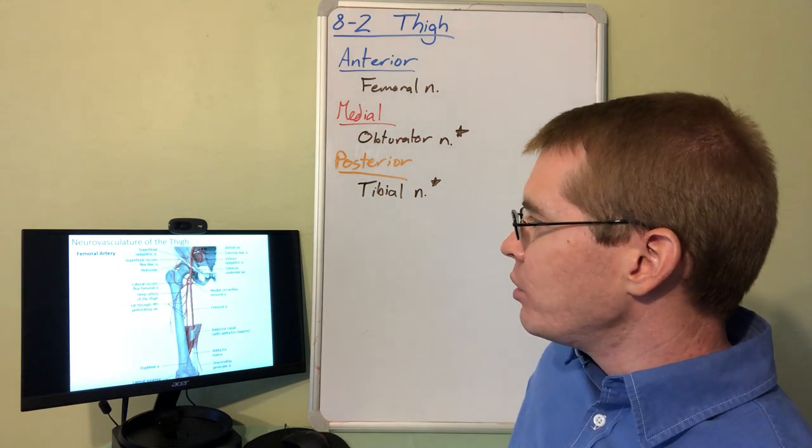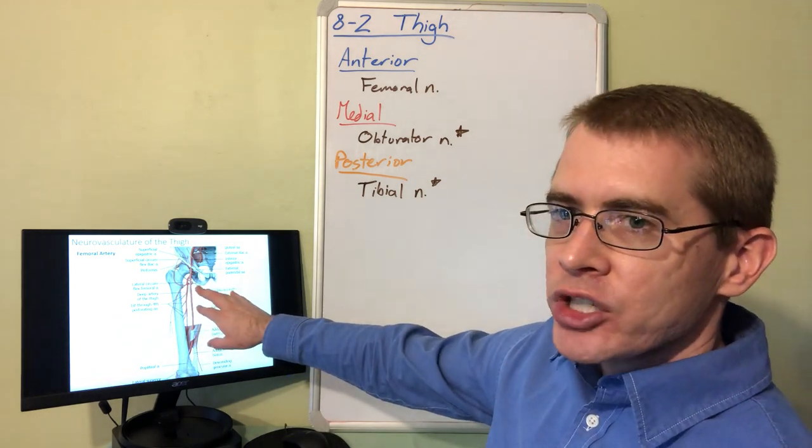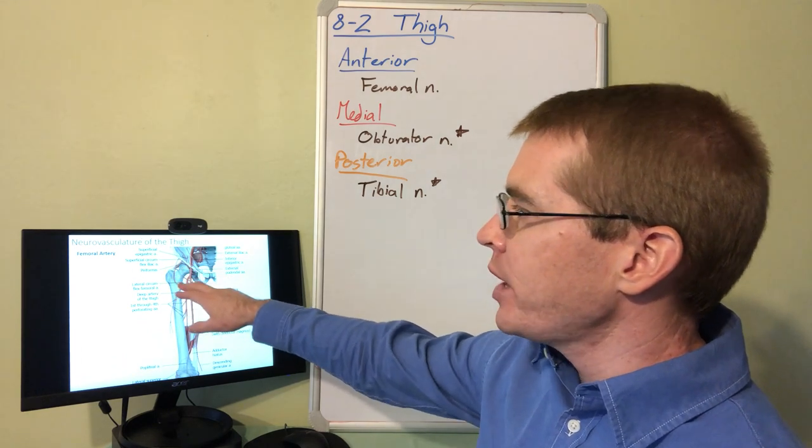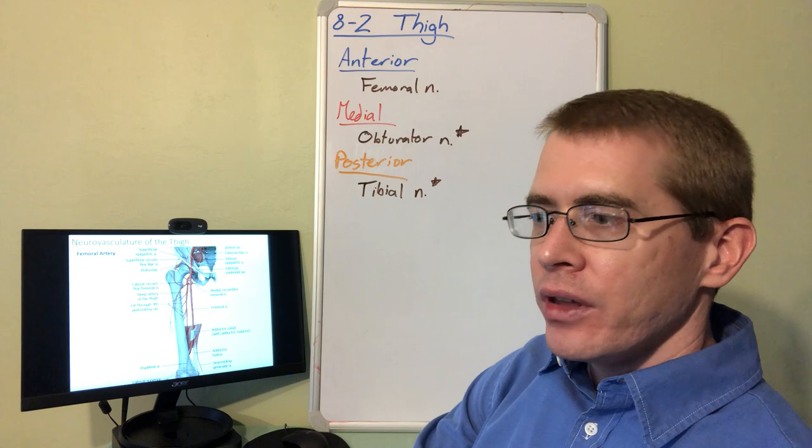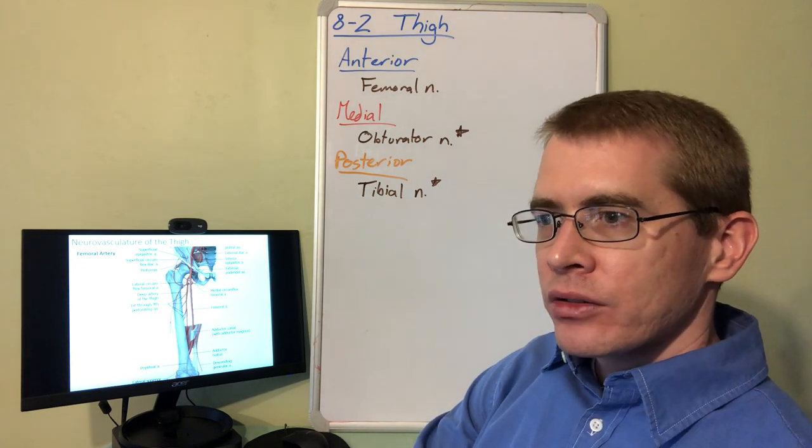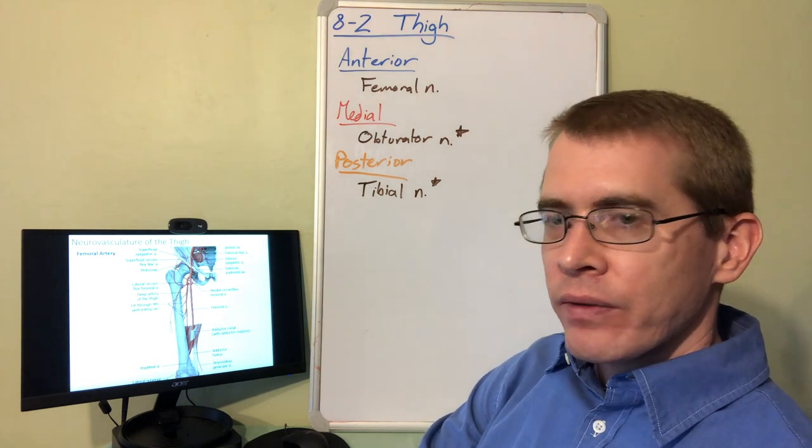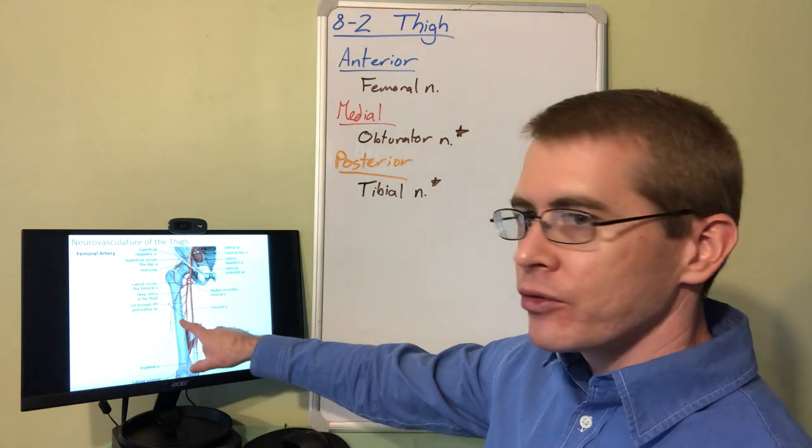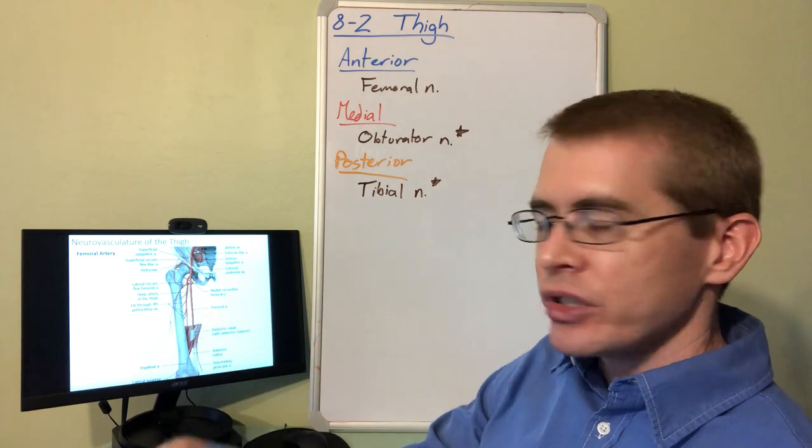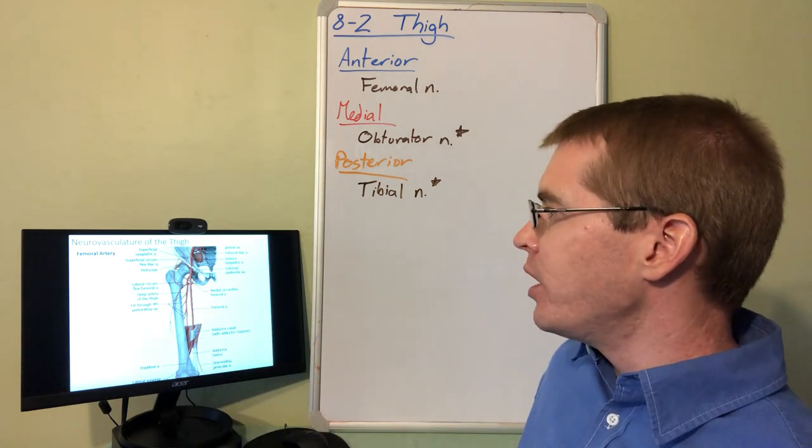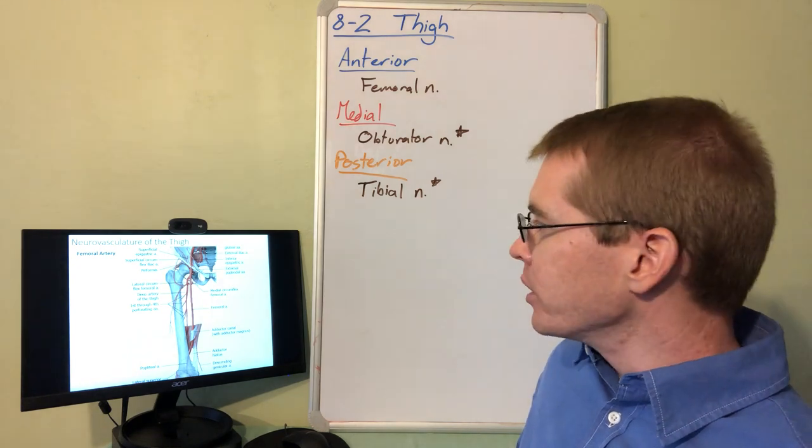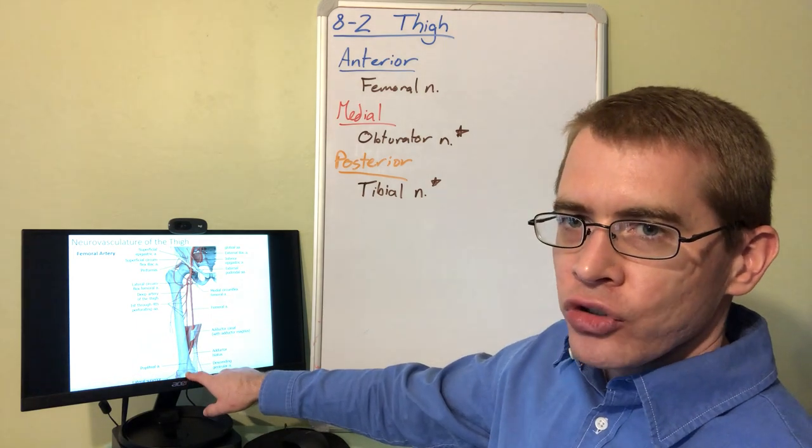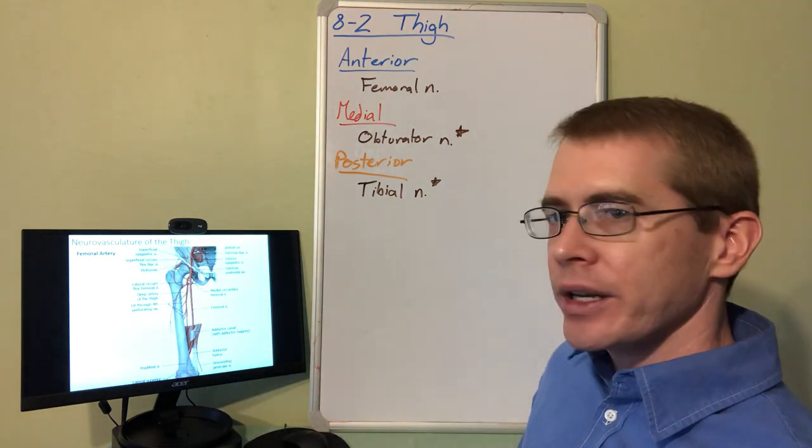We can see in more detail the branching patterns within the thigh. There are circumflex femoral arteries around the neck of the thigh, just like we had circumflex humeral arteries around the neck of the humerus. We have perforating arteries perforating the muscles and supplying the muscles coming off of the deep femoral artery. The femoral artery extends down behind the knee into the popliteal fossa, which we'll talk about next time.